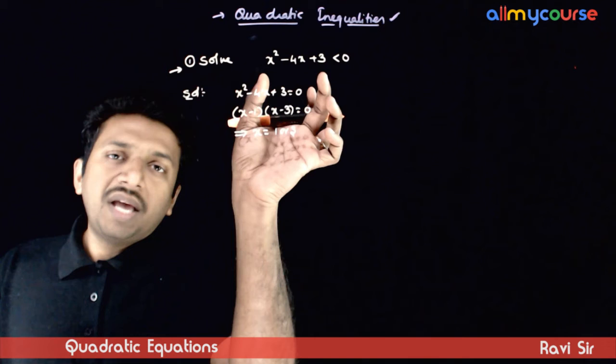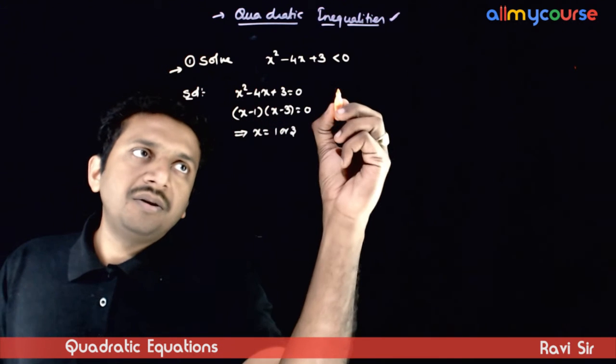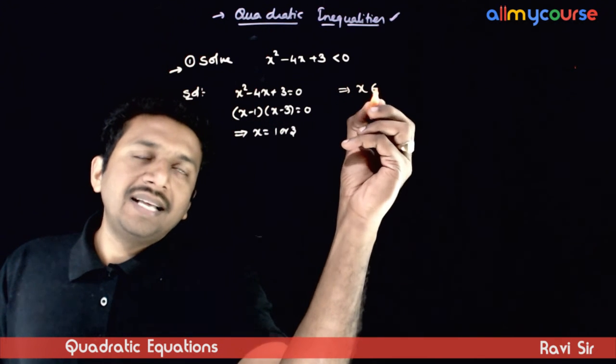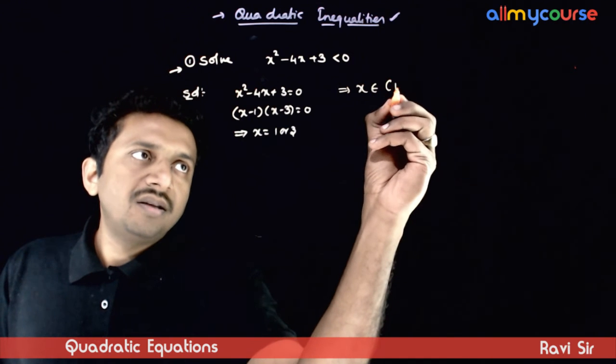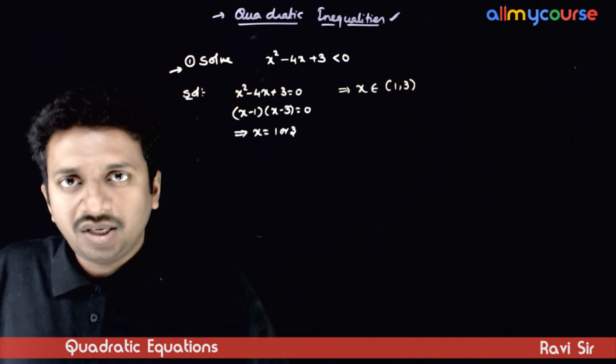These are the roots. A quadratic expression less than 0 implies x lies between the roots, that is open 1 to 3.